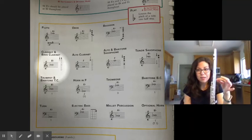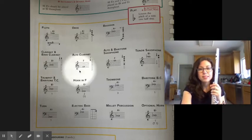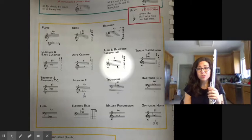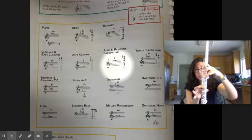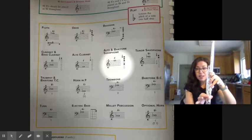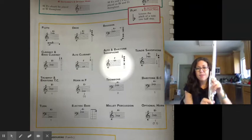Saxophones, your new note is a high F. It's just like your low F—not F-sharp, F, your first finger—but you also get to press your thumb on your octave key to make it higher. So F, first finger and your thumb.